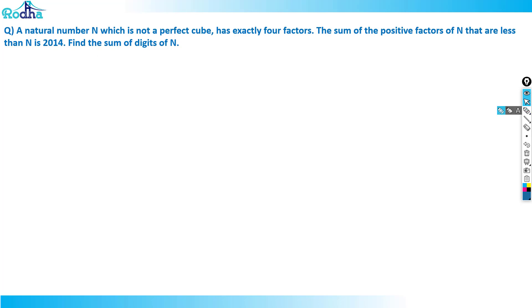A very good question. Look at this: A natural number N which is not a perfect cube has exactly four factors. The sum of the positive factors of N that are less than N is 2014. Find the sum of digits of N.